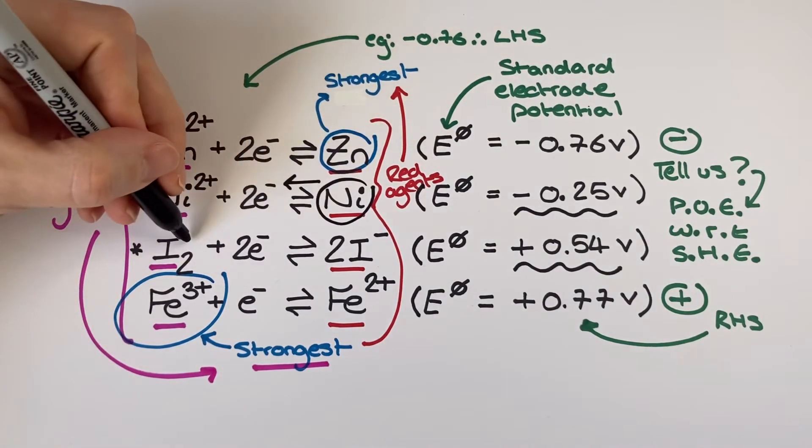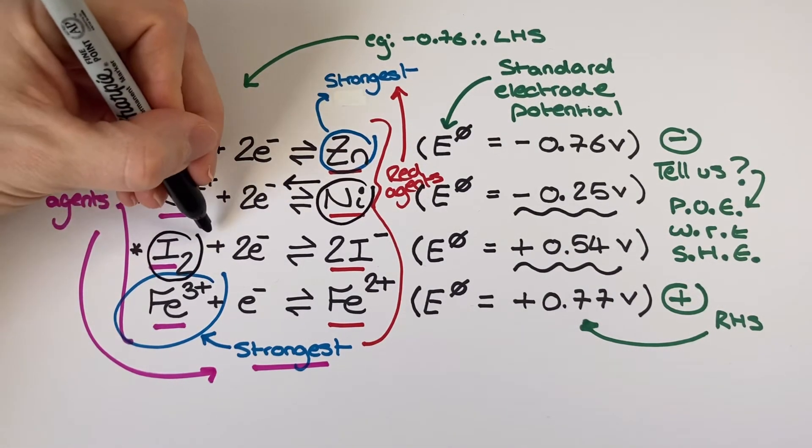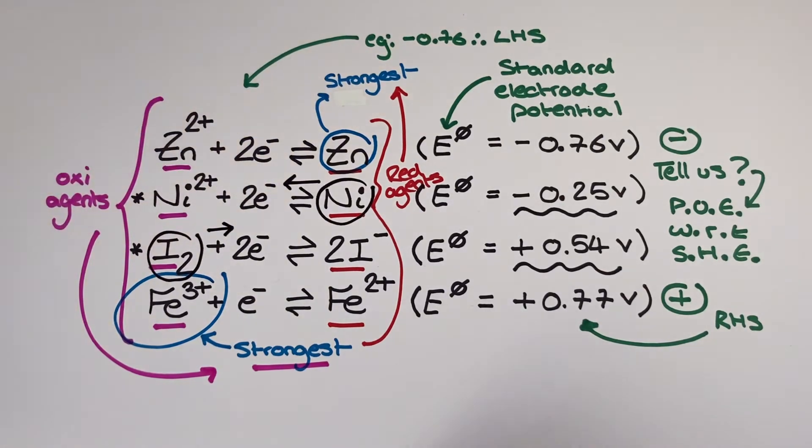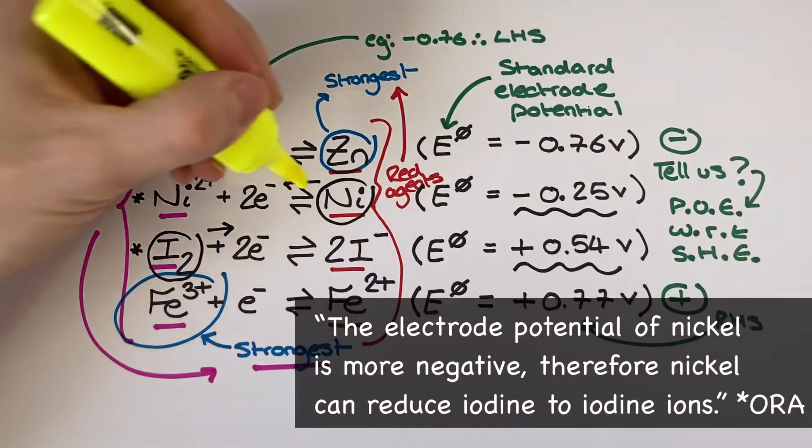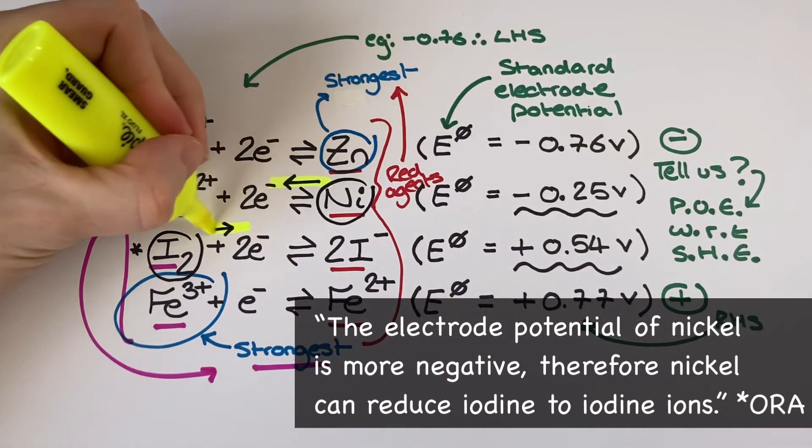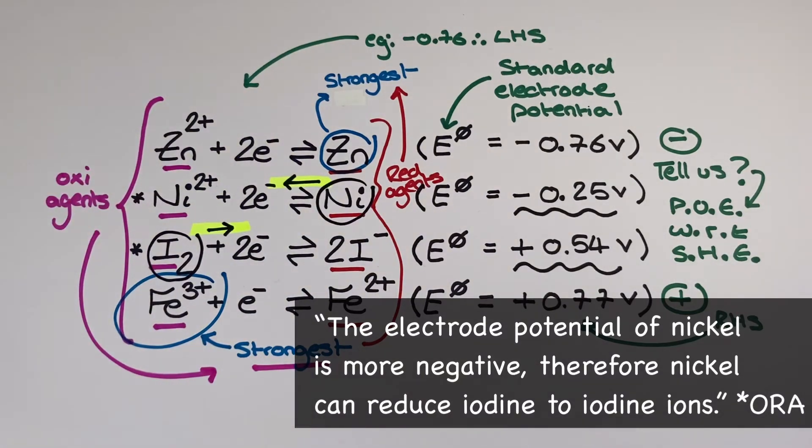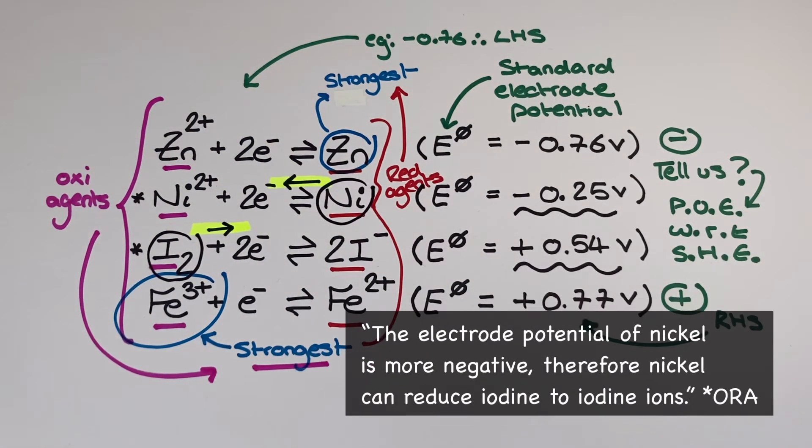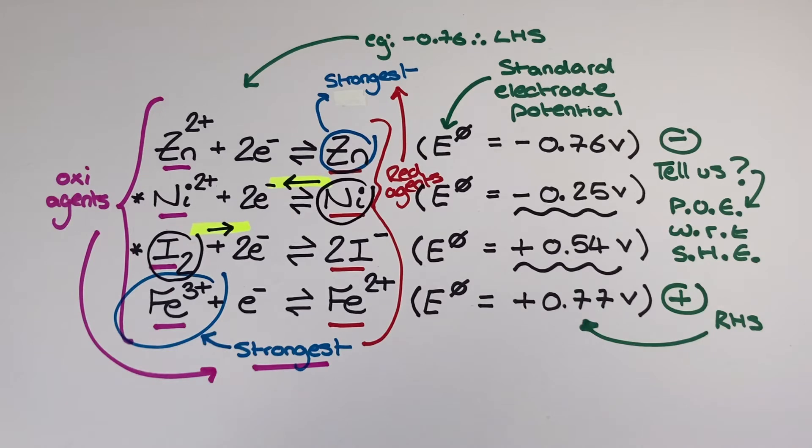Now the nickel half equation has a more negative electrode potential than the iodine one. And so that means when I combine these two together the nickel equilibrium is going to shift to the left hand side and the nickel gets oxidised to nickel 2 plus. The iodine equilibrium will shift to the right hand side and the iodine gets reduced to iodide ions.